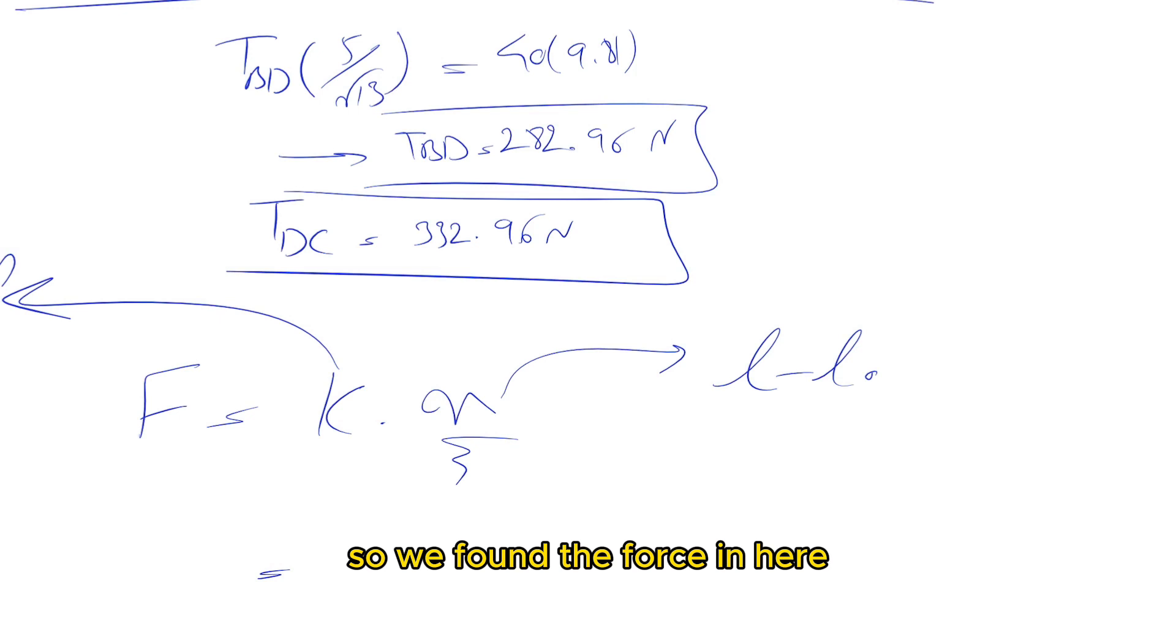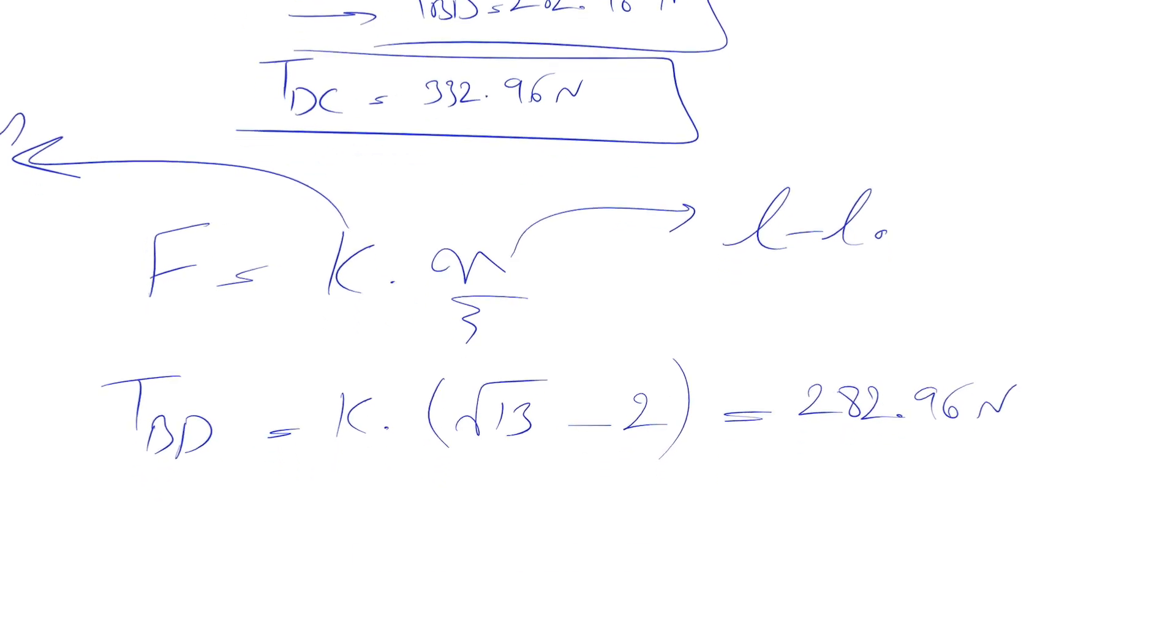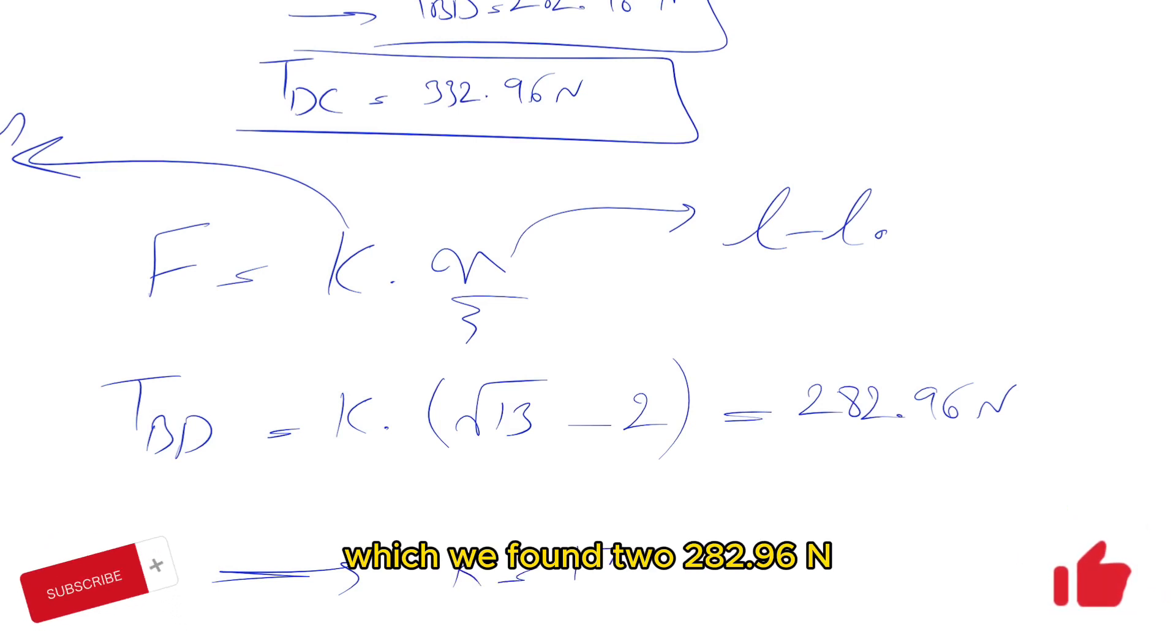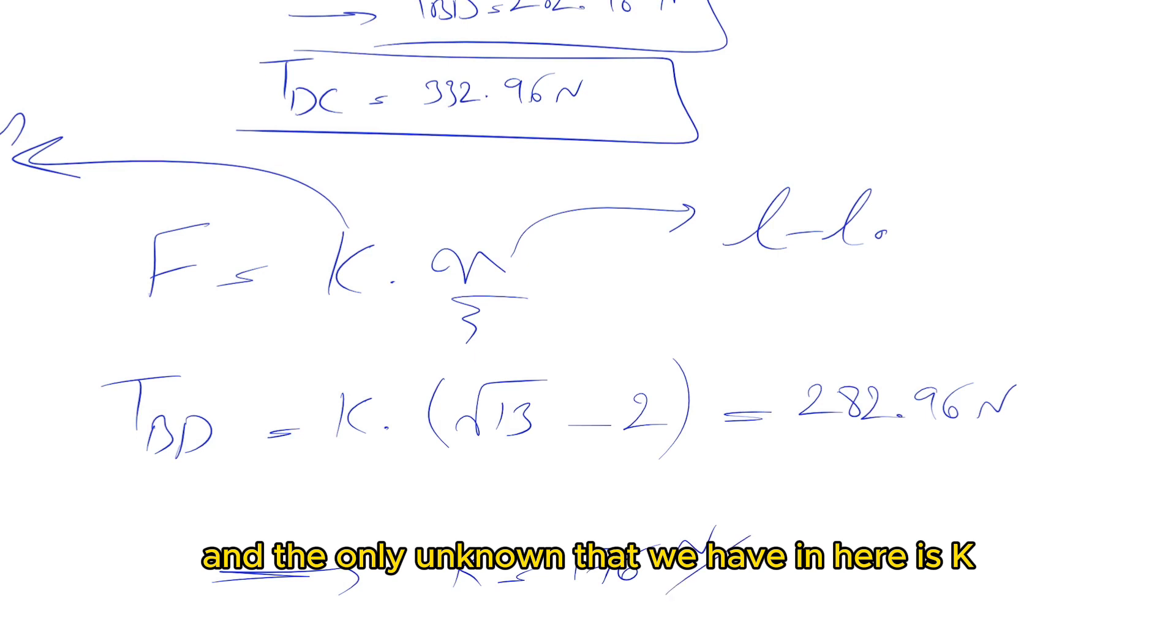We found the force in the spring, which is T_BD. So we have T_BD as our force, k is what we're looking for, and for L we found the stretched length square root of 13. The unstretched length was 2 meters. This equals T_BD, which we found to be 282.96.